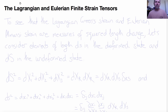Today we're going to look at some properties of the Lagrangian and Eulerian finite strain tensors that we derived last time, and from that derive another strain tensor that's actually the one more commonly used in most engineering applications.